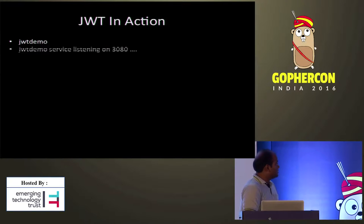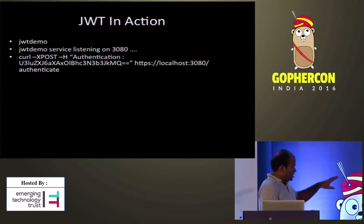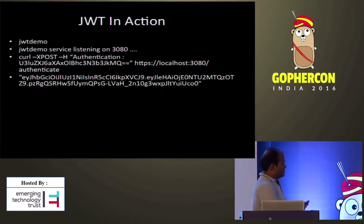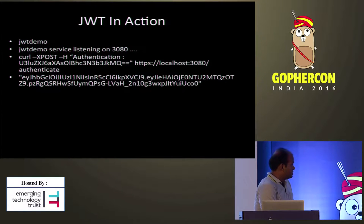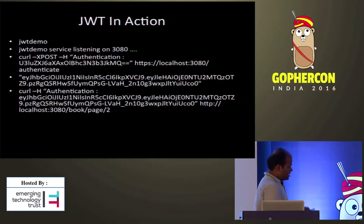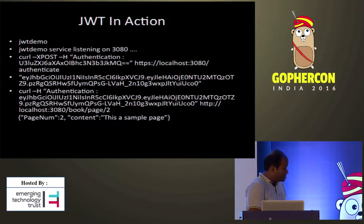How to test it using curl — I run the service on port 3080. I send a POST request; that part is a base64-encoded username and password using simple authentication. After that authentication, the client gets a JWT token. With a new request, the client sets this token in the header and invokes book/page/2, and the service responds. That's how JWT is used.